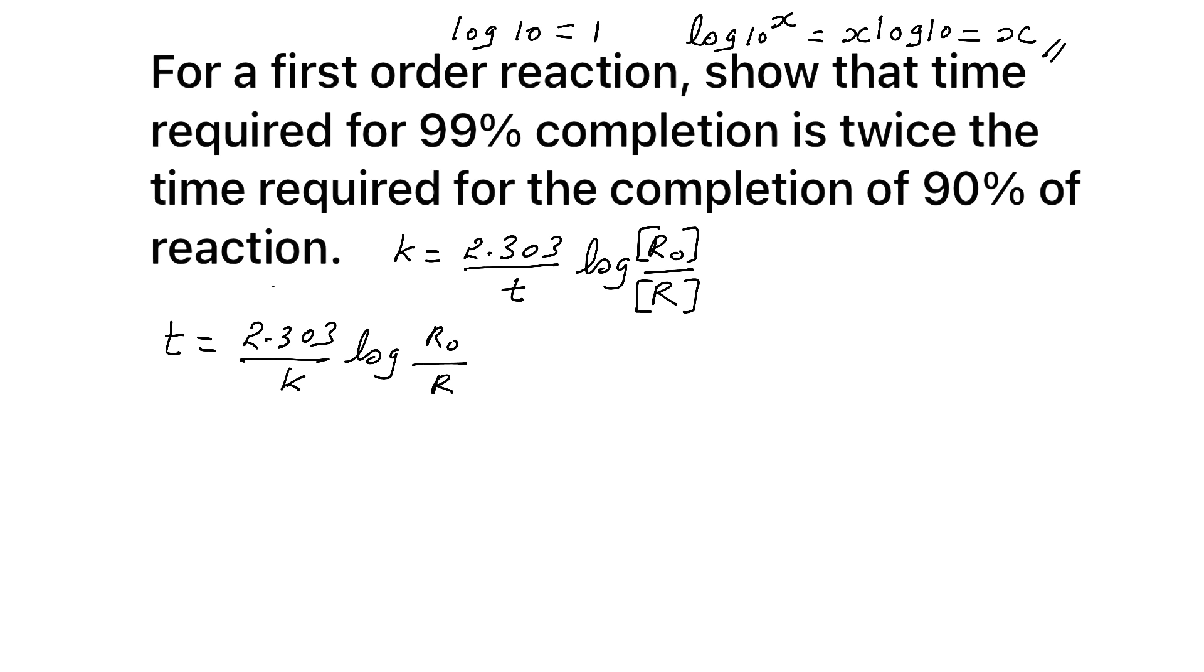Now case 1 for 99% completion. As it is in percentage, for case 1, see 99% is completed. As it is in percentage, you can take initial concentration as 100. Now how much is completed? 99%. So what is left? 100 minus 99, that is 1. So case 1, we can say T1. So T1 is equal to 2.303 by K log R0 is 100 by R is 1.